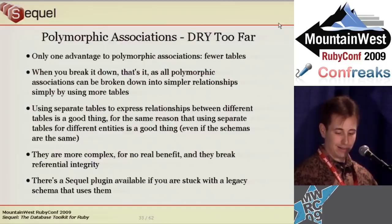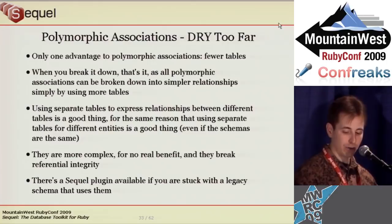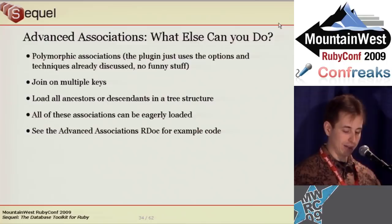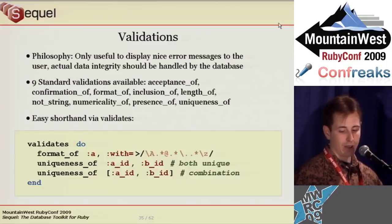Sequel does not support polymorphic associations because I think they are a bad idea. Their only purpose is to reduce the number of tables, which is a solution to a non-problem. An association between two separate classes should have its own join table, and polymorphic associations are more complex and break referential integrity. If you must use them, there is a Sequel plugin that handles them — it doesn't do any monkey patching, just uses the options and techniques already discussed. It's my belief that Sequel has the most powerful and flexible associations of any Ruby ORM.